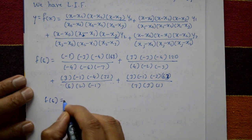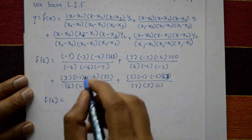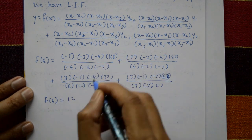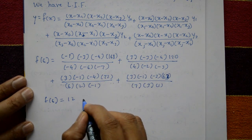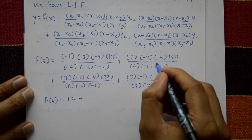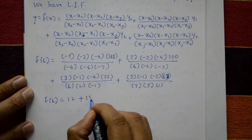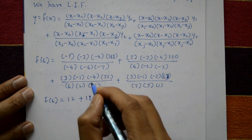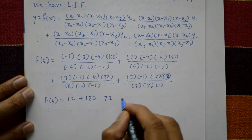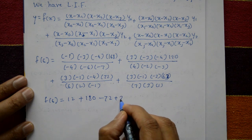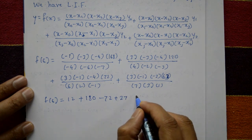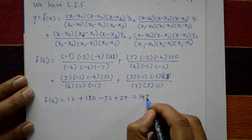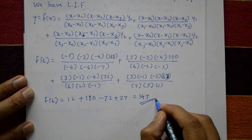Now f of 6 is equal to: first term gives 12, cancel the terms, plus 12. Second term is 180, minus 72 for the third term, plus 27 for the fourth term. This is equal to 147. This is the required solution.